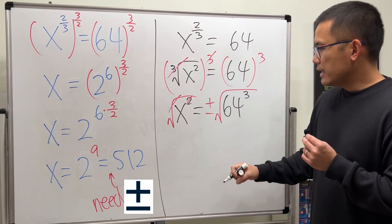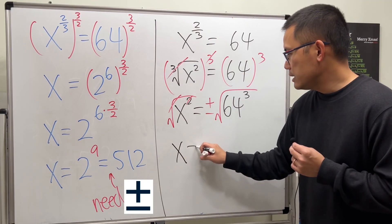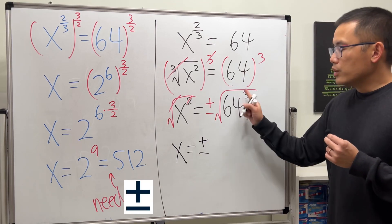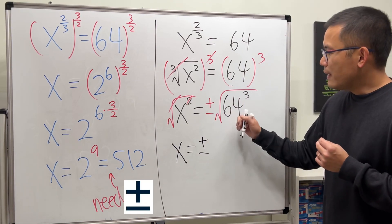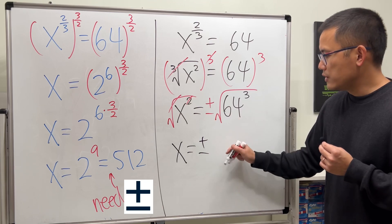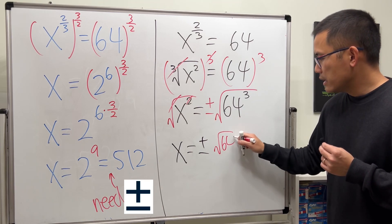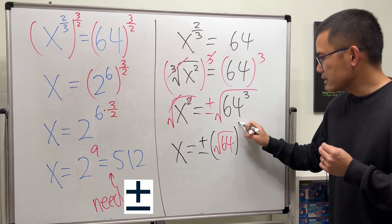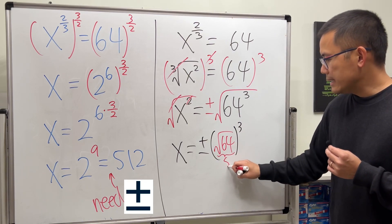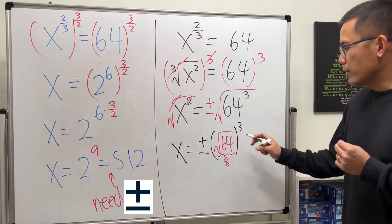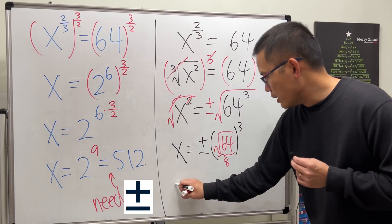And then right here we'll get x is equal to plus or minus, to work this out. In fact, you can actually do the square root of 64 first, and then the third power after that. And this right here is equal to 8, so you just have to do 8 to the third power.